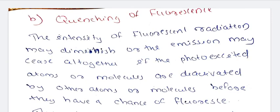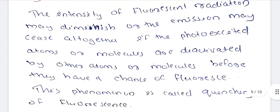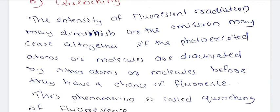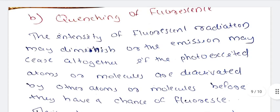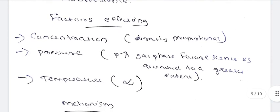Next is quenching of fluorescence. The intensity of fluorescent radiation may diminish, or emission may cease altogether, if the photo-excited atoms or molecules are deactivated by other atoms or molecules before they have a chance to fluoresce. This is called quenching of fluorescence.